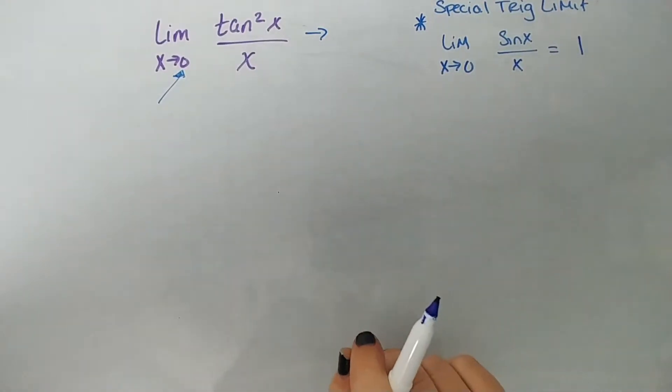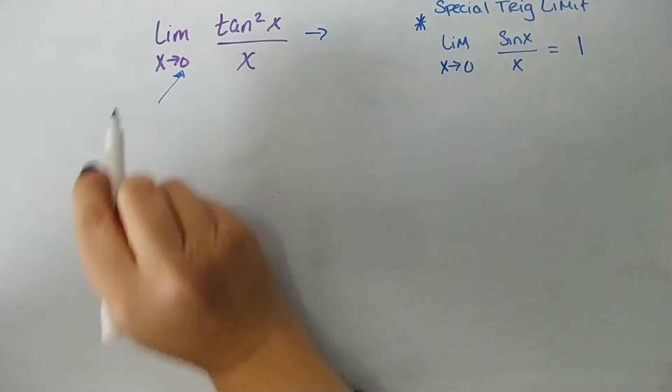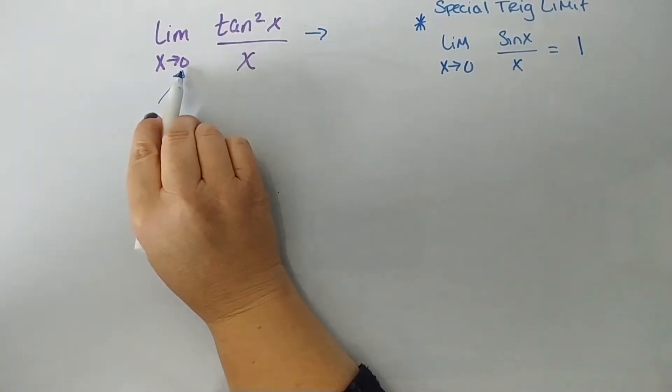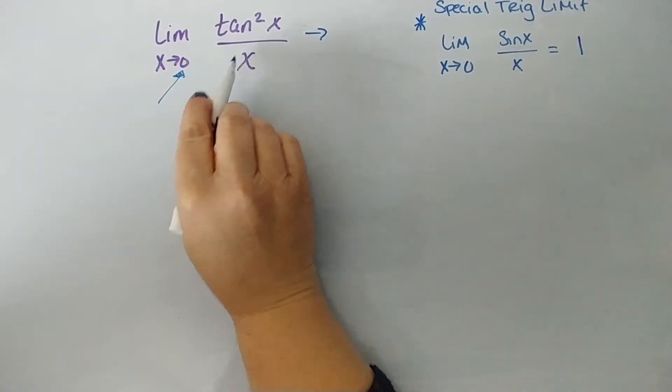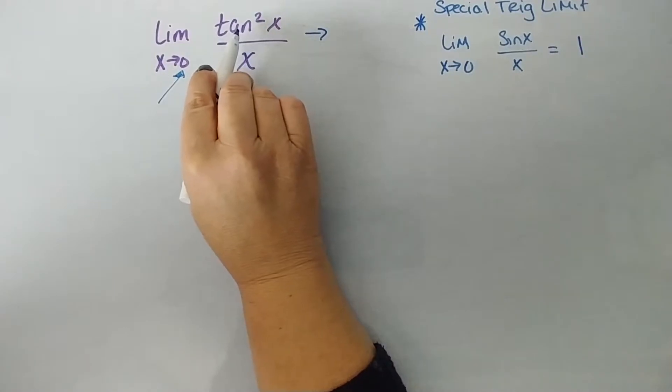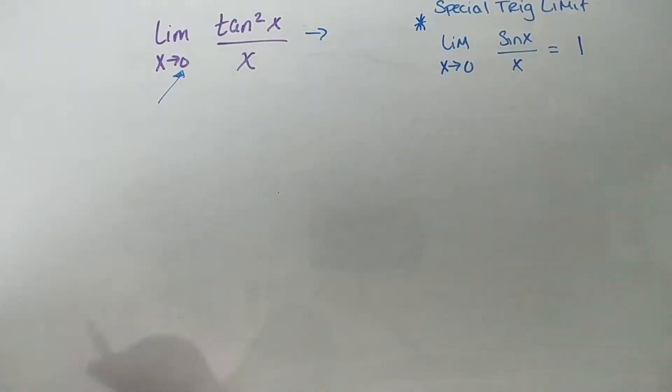So we're going to use that. Now, you don't know that you're going to use it yet, but I have a little hint here because x is approaching 0. It's a trig function. Tangent squared does involve sine and cosine. Actually, it involves sine squared and cosine squared. So I'm just going to keep this in mind over here. Okay, so let's start rewriting.